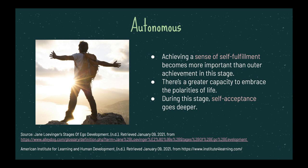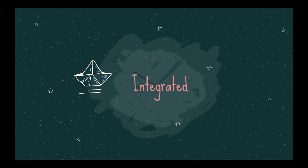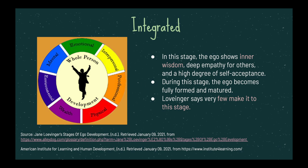The last stage is the integrated stage. In this stage, the ego shows inner wisdom, deep empathy for others, and a high degree of self-acceptance. The ego becomes fully formed and matured. Loevinger says very few people make it to this stage. The integrated stage is actually very similar to Maslow's hierarchy of needs — specifically self-actualization. This is more likely in older people; senior citizens are most likely able to achieve the integrated stage because they are near the end of their life, have come to terms with what they've done, and are breaking away from the need for material items and accomplishments.